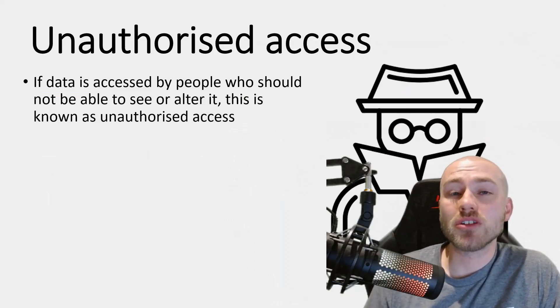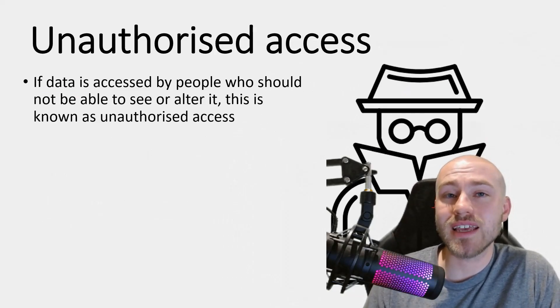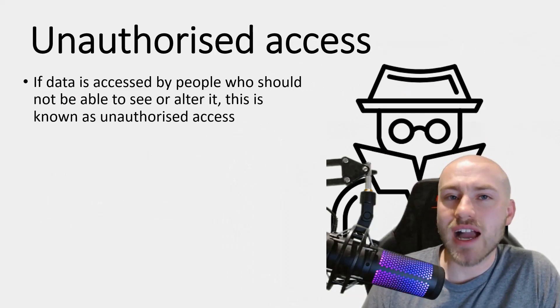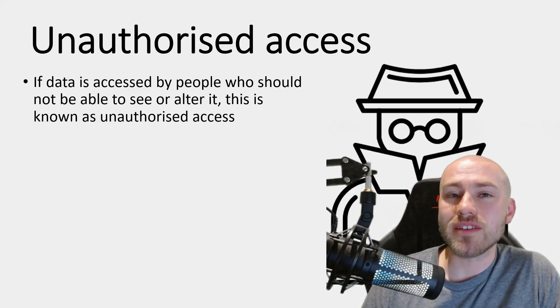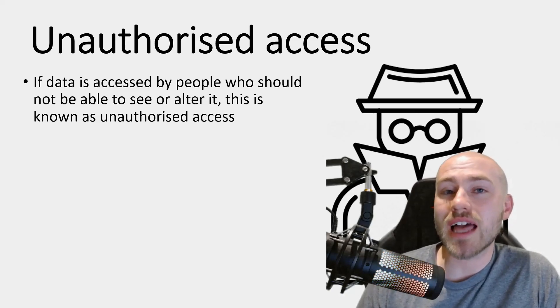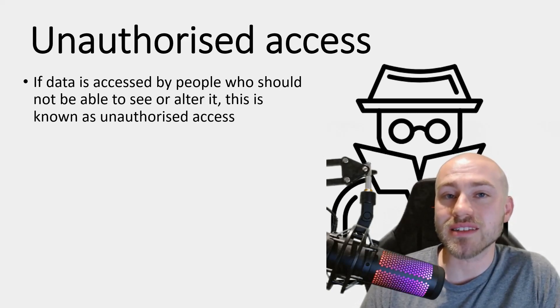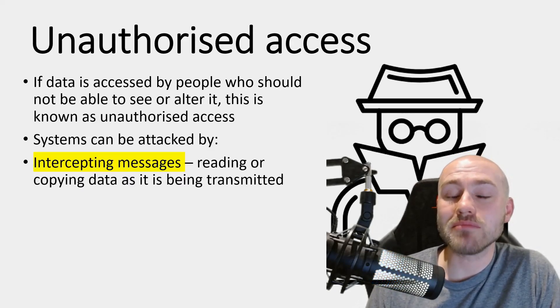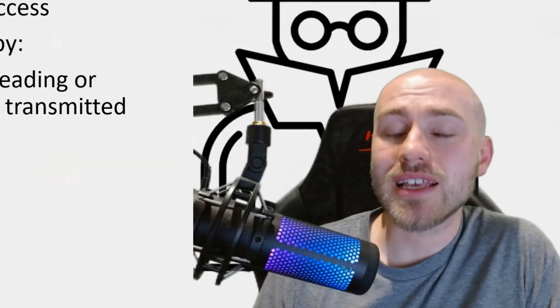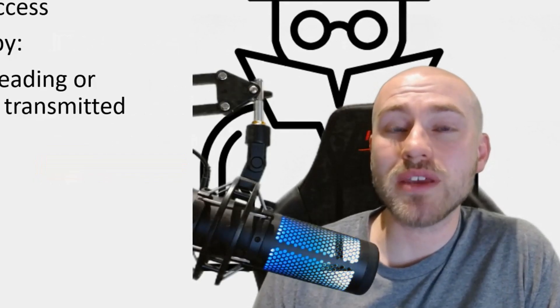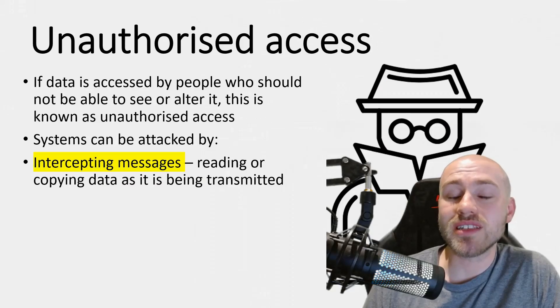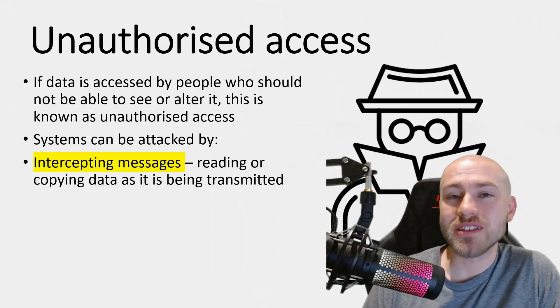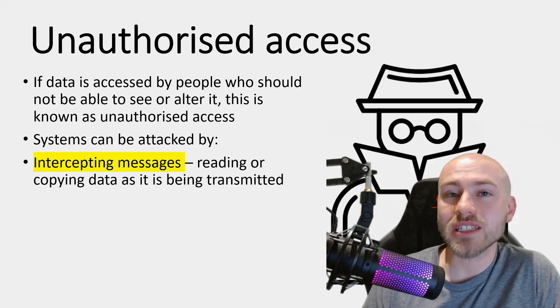Another potential threat is unauthorized access — when someone hasn't been given permission to access data but they access it anyway. There are multiple ways this can happen; it's not just because somebody's left their device unattended. One method is by intercepting messages. As data is being transmitted, if it's not encrypted, the intercepted data can be read or copied, allowing access to confidential information.